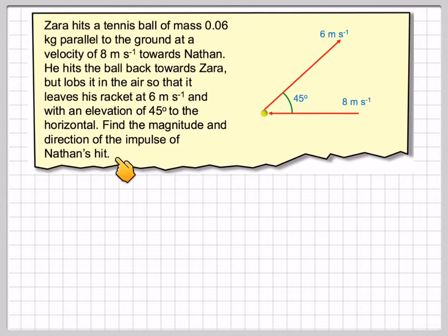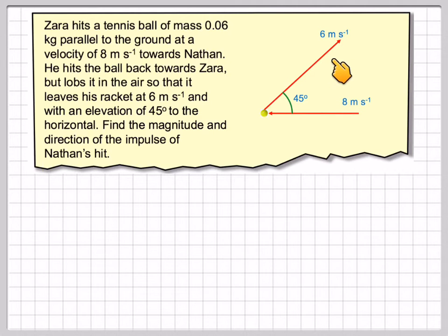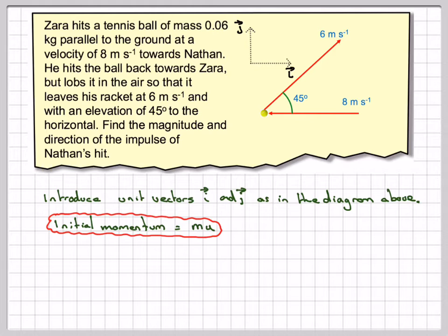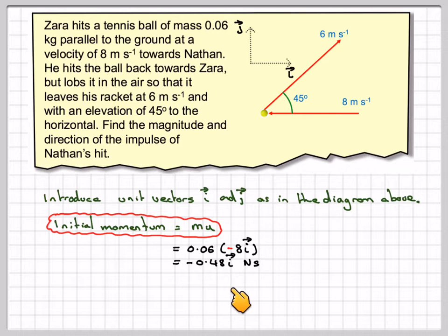Find the magnitude and direction of the impulse of Nathan's hit. Zara hits the ball towards Nathan and then Nathan hits it, lobbing it into the air at an angle of 45 degrees with a velocity of 6 meters per second. Introducing i and j axes, this velocity will be minus 8i because it's going against the i direction. So the initial momentum MU equals 0.06 times minus 8i, which gives minus 0.48i newton seconds.